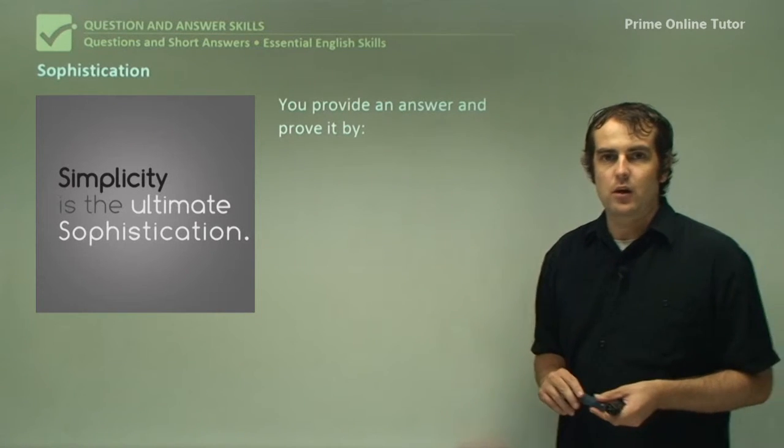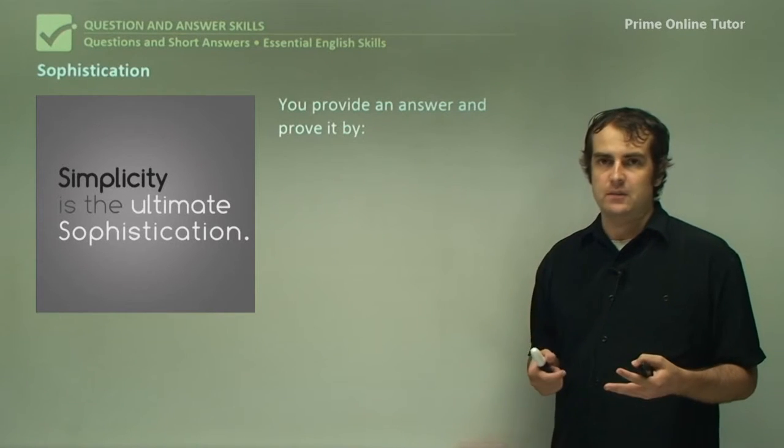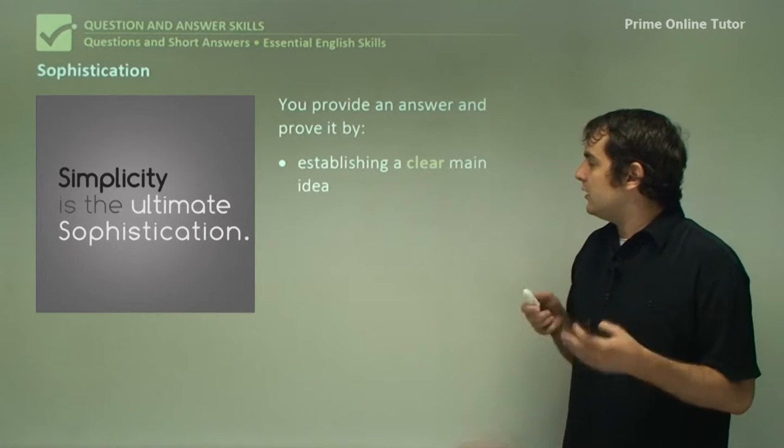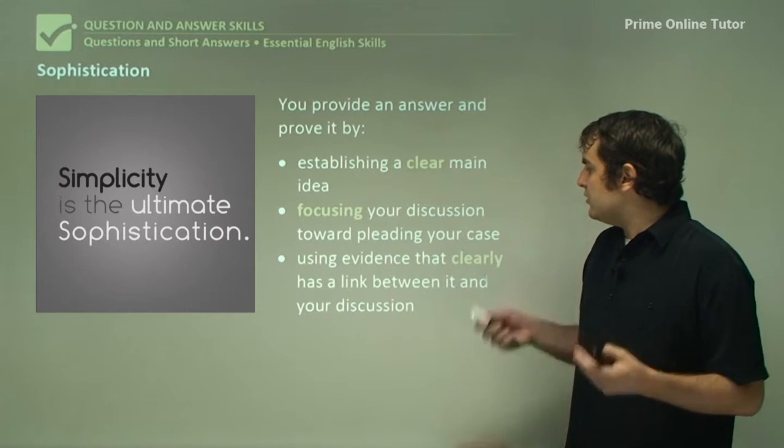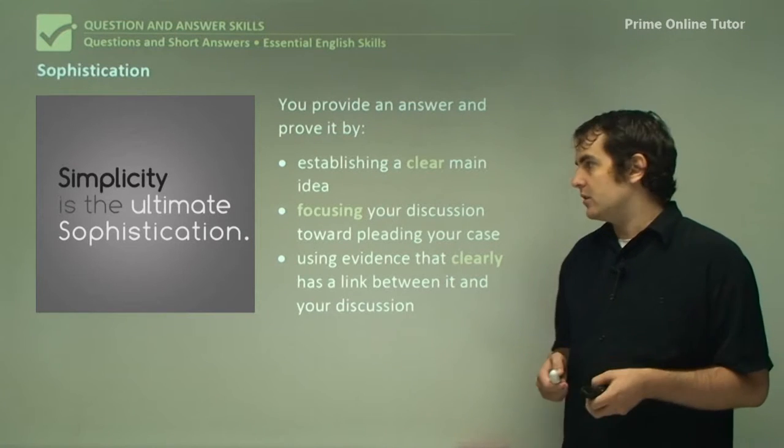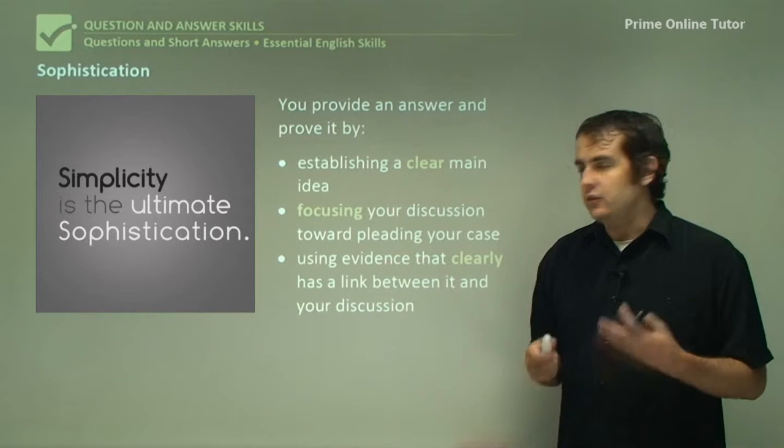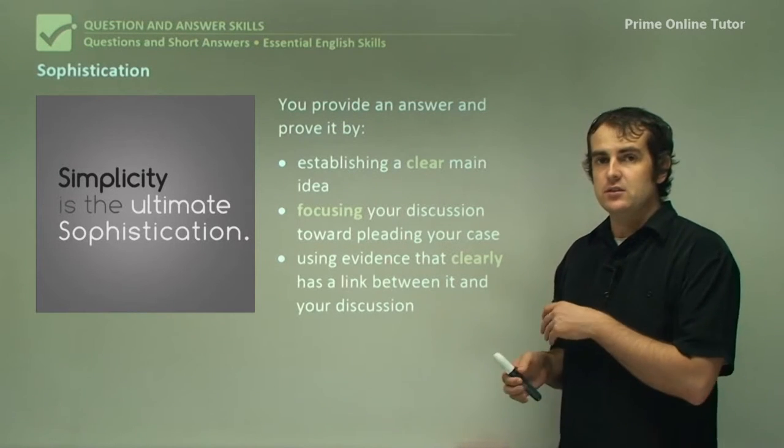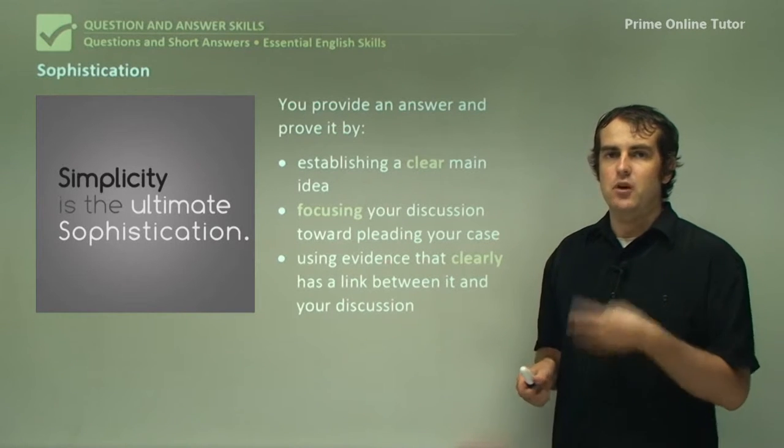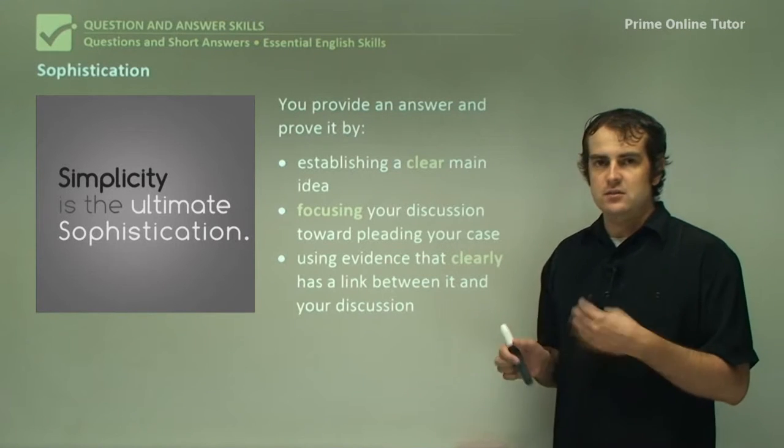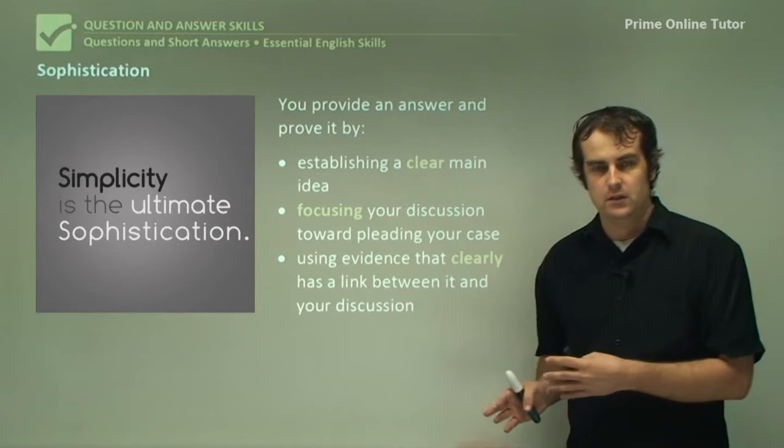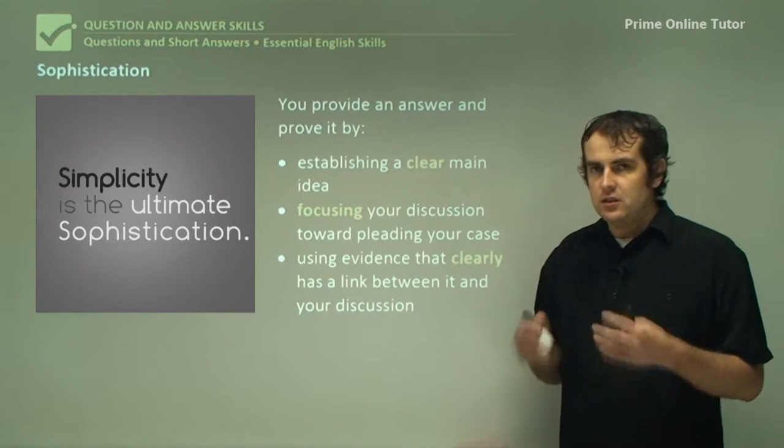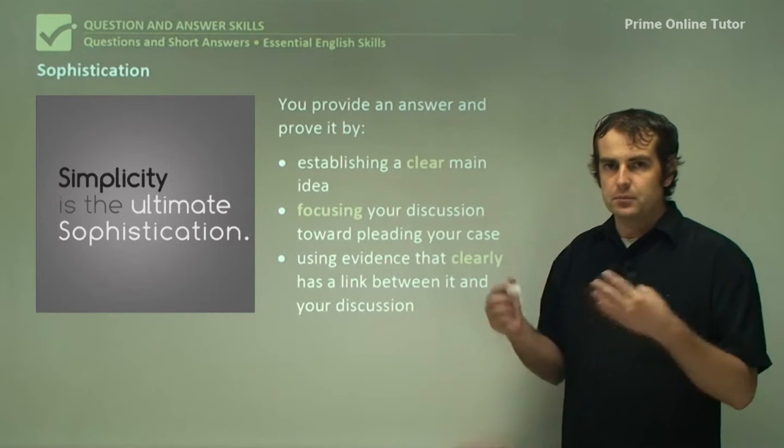This quote, and I like this quote quite a lot, comes from Leonardo da Vinci. Basically, simplicity is the ultimate sophistication. And basically, this is the philosophy here. You provide an answer and prove it by establishing a clear main idea, focusing your discussion towards pleading a case, and using evidence that clearly has a link between it and whatever it is you're trying to discuss. This is basically da Vinci's philosophy in essay format, essentially. You're focusing on doing what you need to do and basically serving a purpose, rather than trying to make it complicated, elaborate, and prone to failure, prone to breaking. This is why sophistication is often born out of simplicity. Because simple things don't break as often. They don't fall apart as often. They're easy to fix. They're easier to make. And this is basically the strategy you need to be focusing on. Something that is simple to do and simple to read and simple to follow and simple to mark. That's what a marker is looking for.